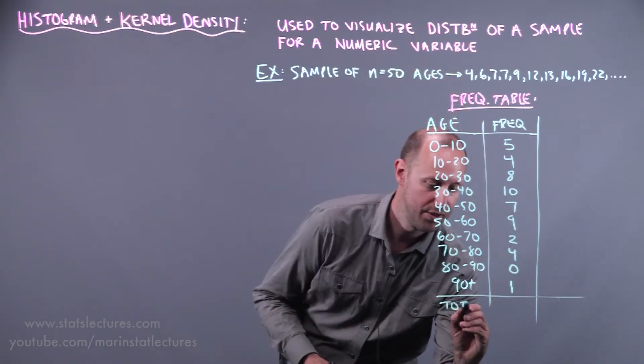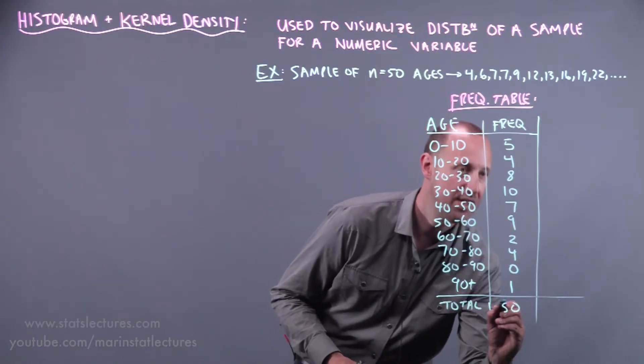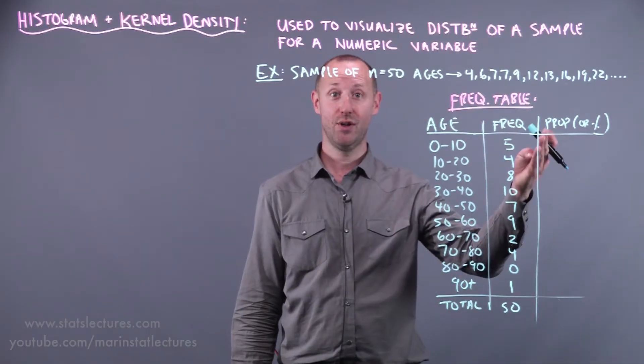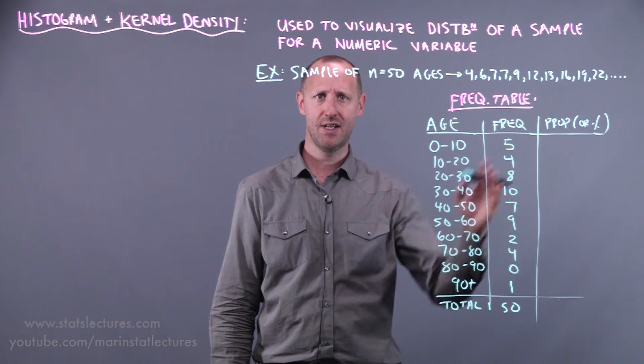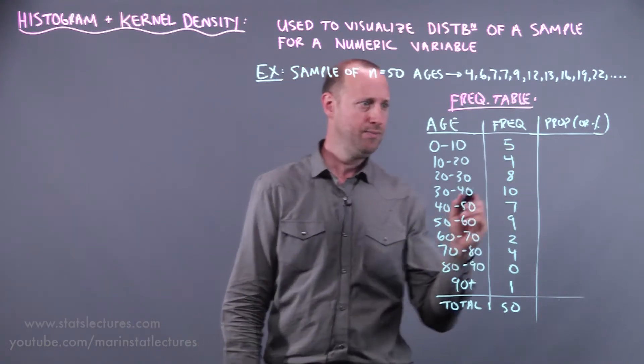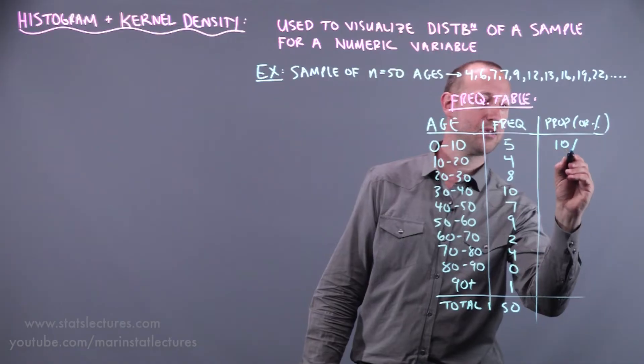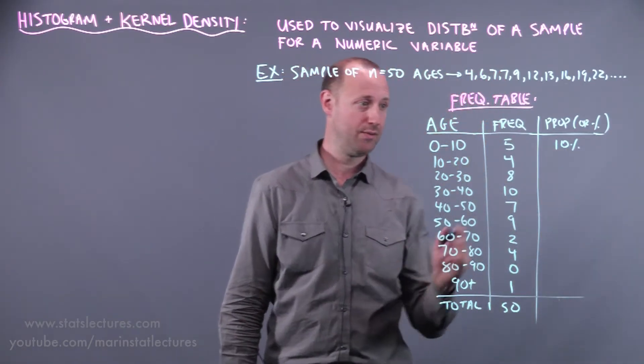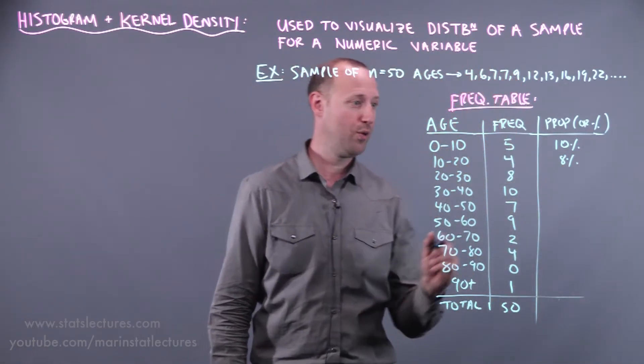We can fill this to be the total and in total we've got 50 individuals. So the next thing we can do is convert these frequencies into either proportions or percentages. So I'm going to go through and write the percentage but it doesn't really matter. So this frequency of 5 ends up being 10% and if you want to record as a proportion it will be 0.10. This 4 is 8% again our proportion of 0.08.